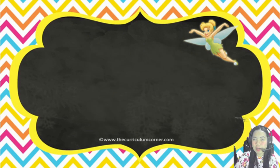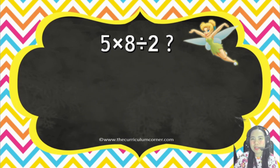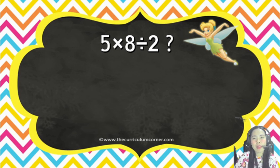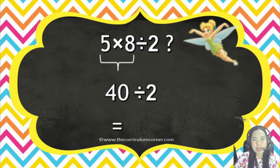How about this one? 5 times 8 divided by 2. Our expression involves multiplication and division, so we should do them from left to right. First, 5 times 8 equals 40, then divided by 2, the answer is 20.